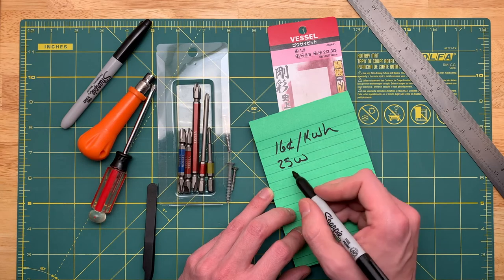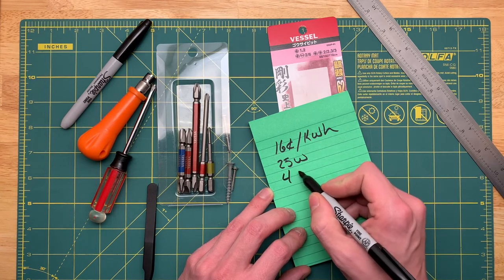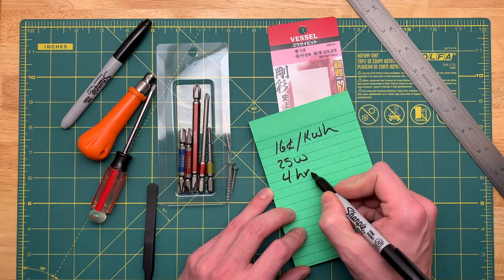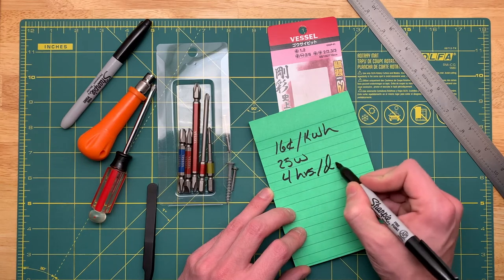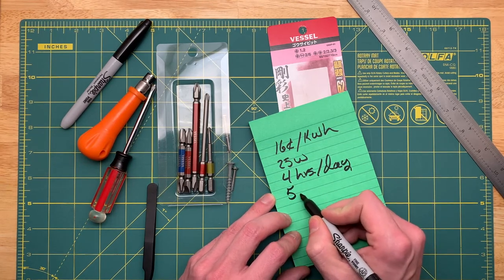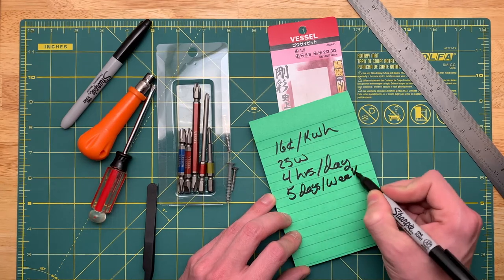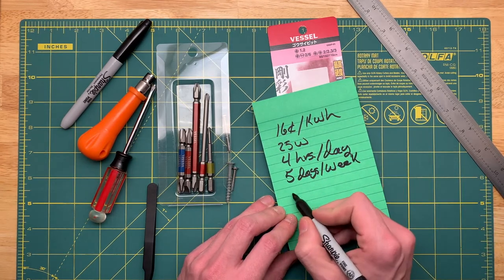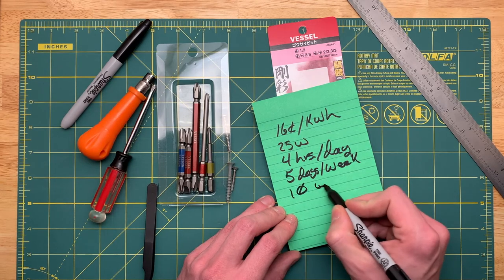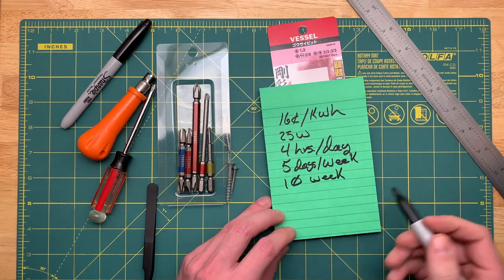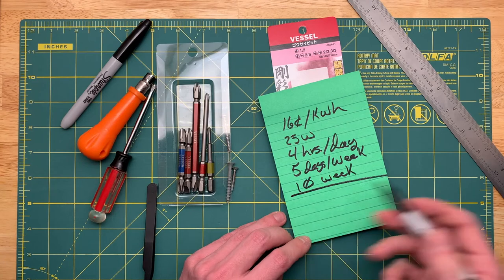So in my area, electricity costs 16 cents per kilowatt hour. This thing is 25 watts. And let's just say that I run it for four hours per day, five days per week, and let's say I run this for a total of 10 weeks. What does that equate out to?